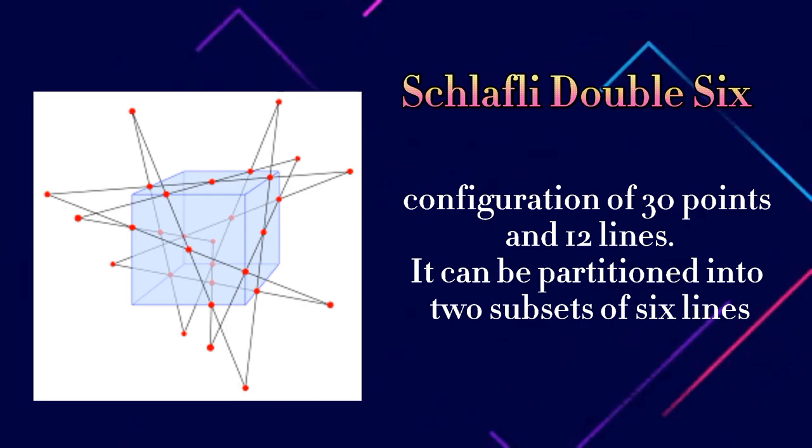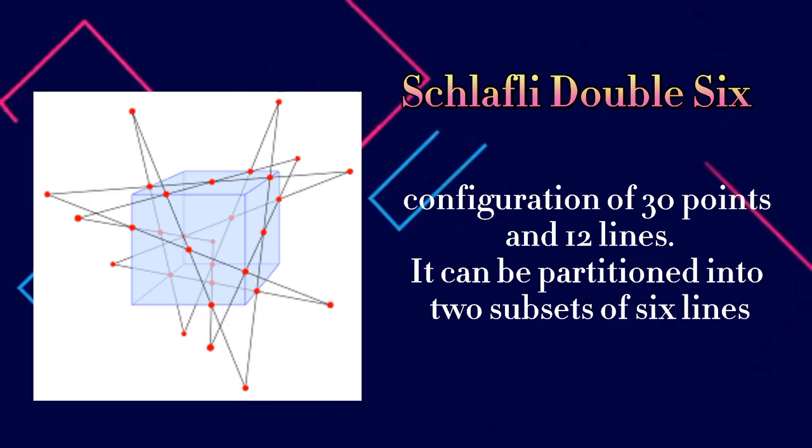The lines of the configuration can be partitioned into two subsets of six lines. Each line is disjoint from (skew with) the lines in its own subset of six lines and intersects all but one of the lines in the other subset of six lines.